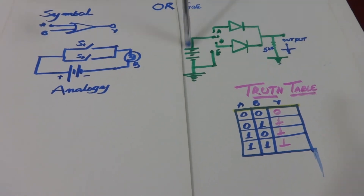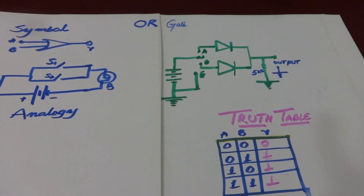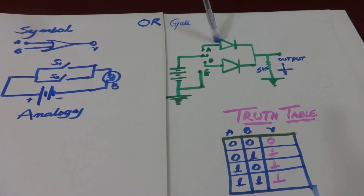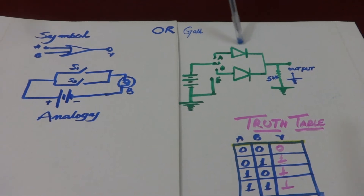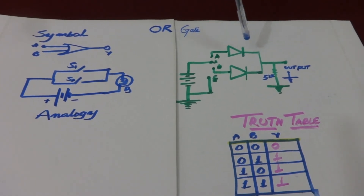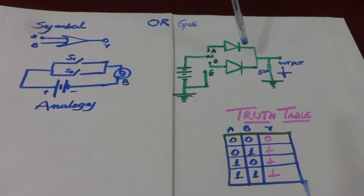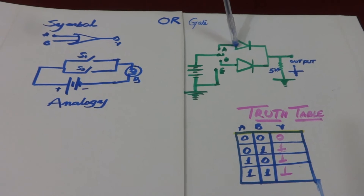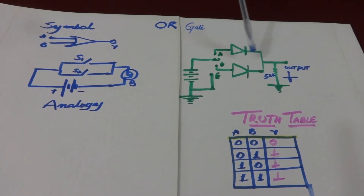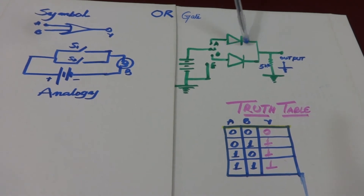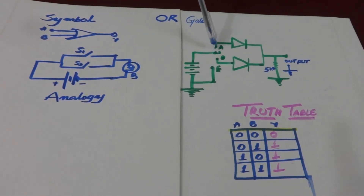Now let's see how we realize the OR gate with a circuit diagram using two diodes. A diode conducts only in forward bias — the positive side of the diode is connected to the positive terminal of the cell and the negative side to the negative terminal. If the connection is reversed, the p-type semiconductor is at lower potential and the n-type at higher potential, so the diode offers infinite resistance and acts like an open switch.